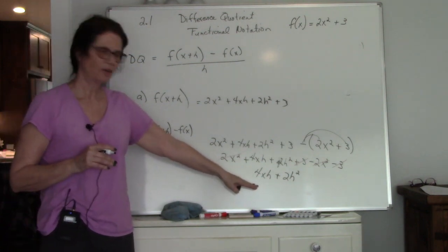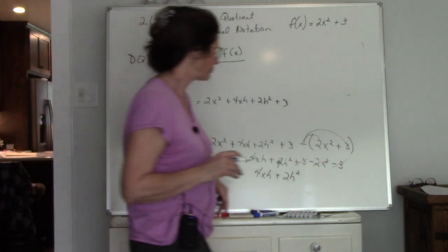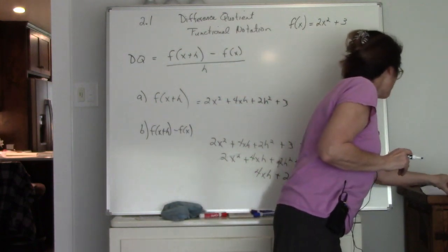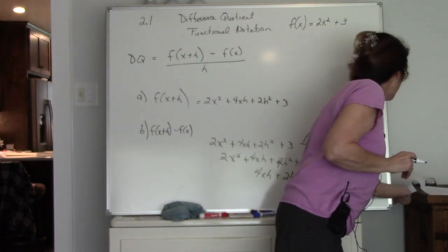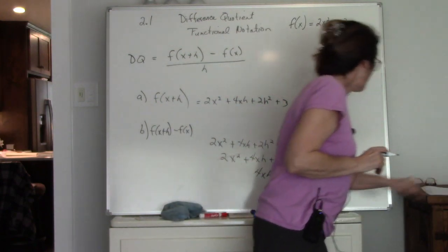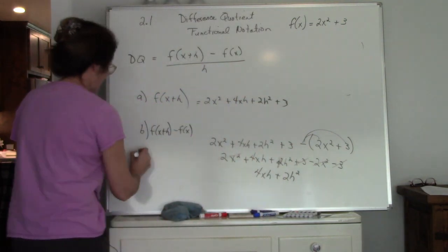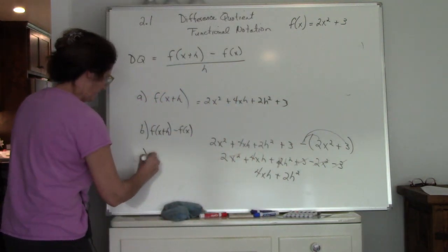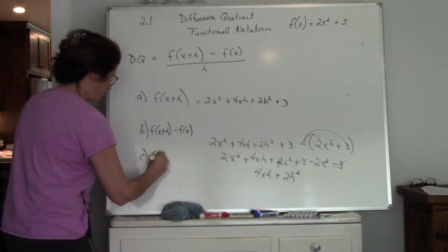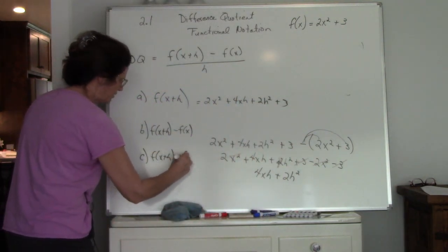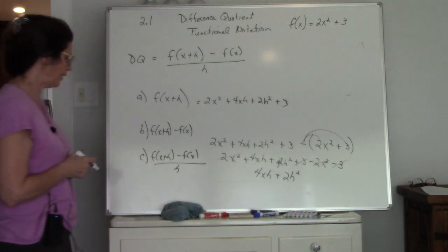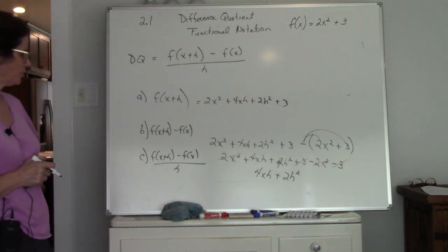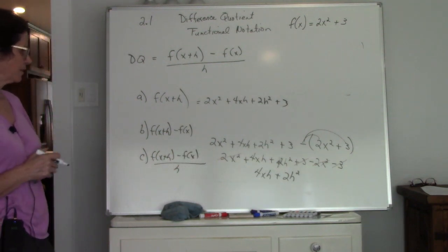The last step of the difference quotient is dividing by h. We're building this up as we go, step by step.